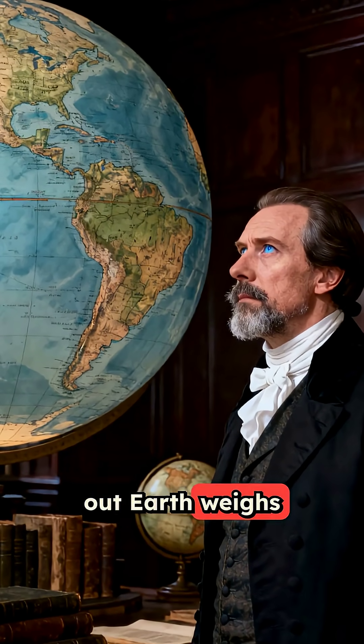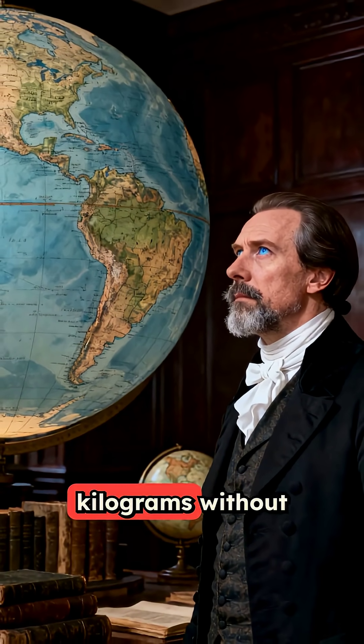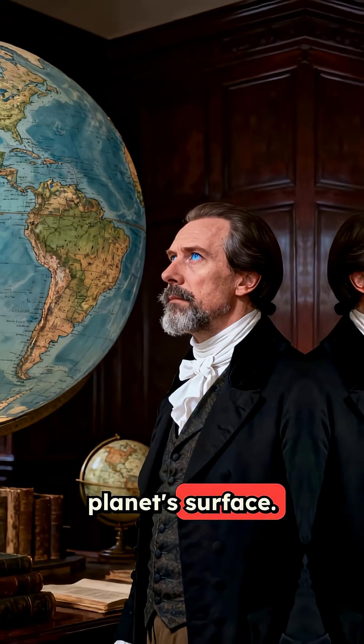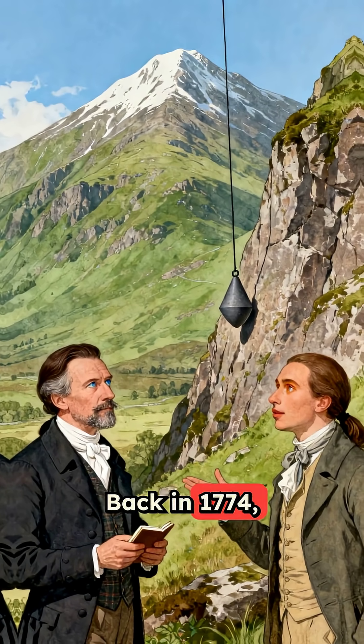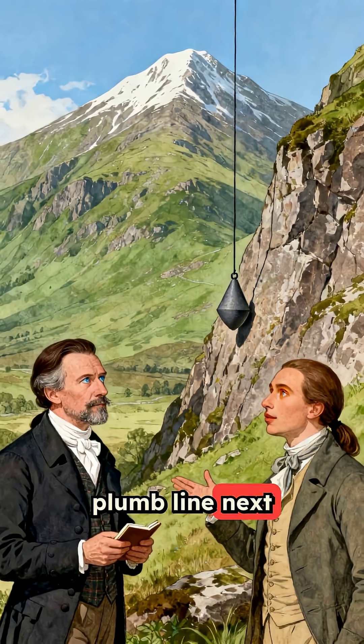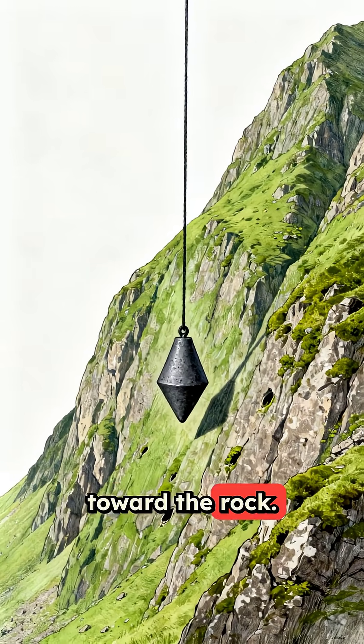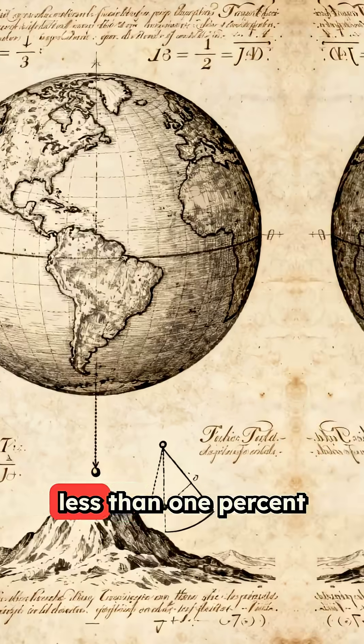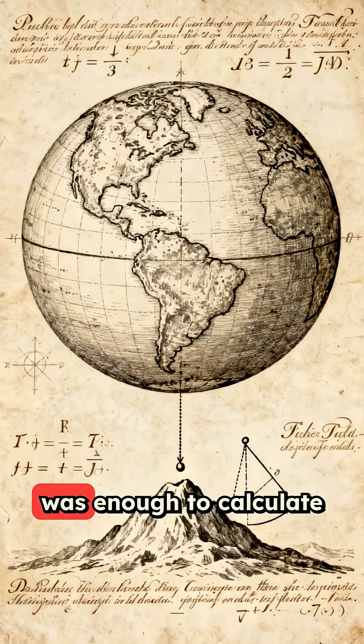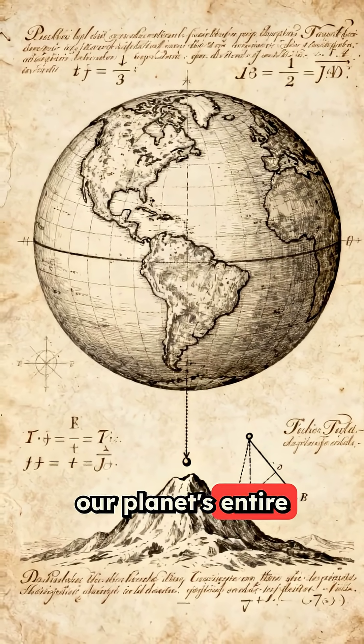Scientists figured out Earth weighs 6 trillion trillion kilograms without ever leaving the planet's surface. Back in 1774, they hung a simple plumb line next to a mountain in Scotland and watched it get pulled slightly toward the rock. That tiny deflection, less than 1% of a degree, was enough to calculate our planet's entire mass.